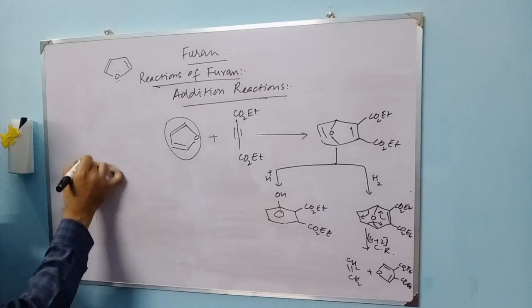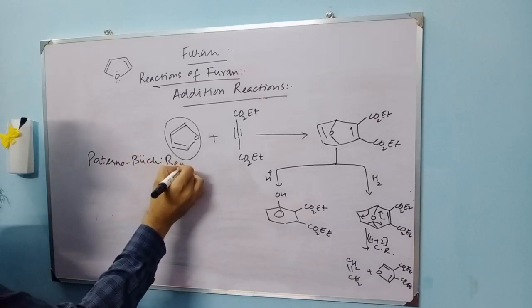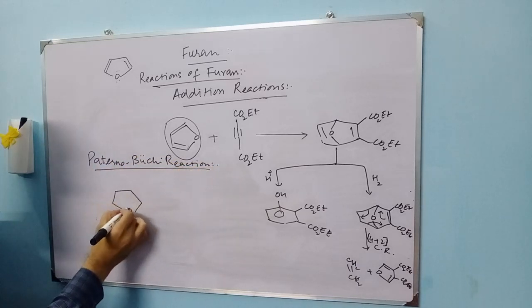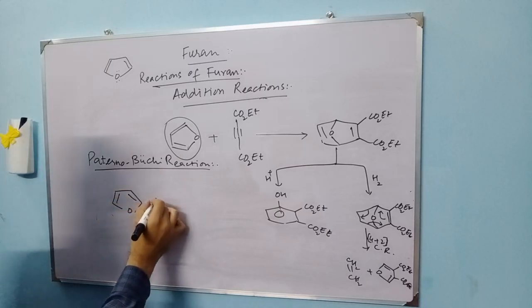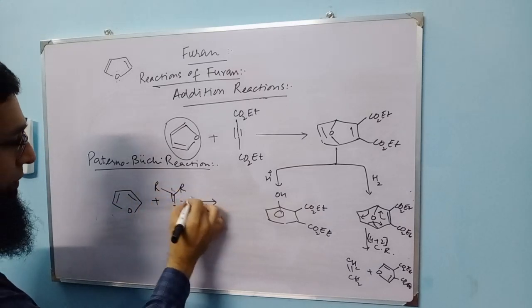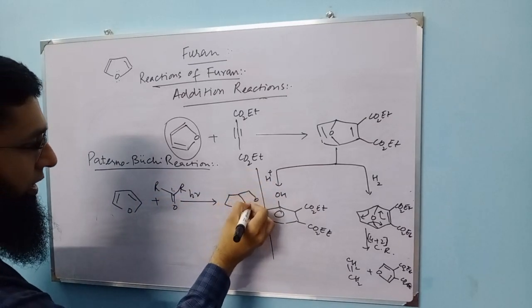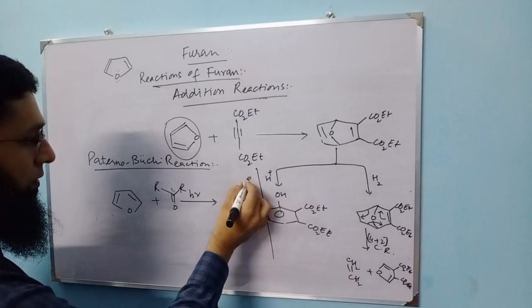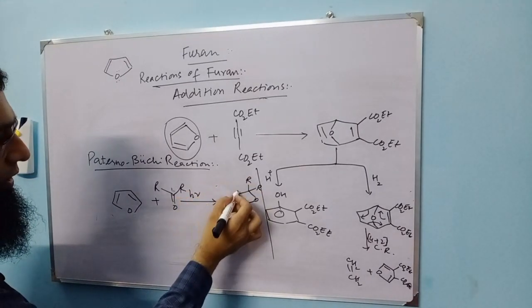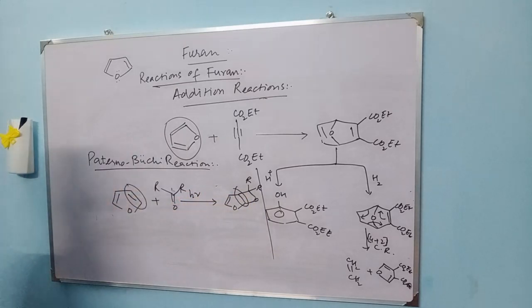The next addition reaction is the Paternò–Büchi reaction. In this case, furan reacts with ketones in the presence of sunlight, and oxetanes — 4-membered oxygen-containing heterocycles — are obtained. This reaction takes place only across one double bond of furan.